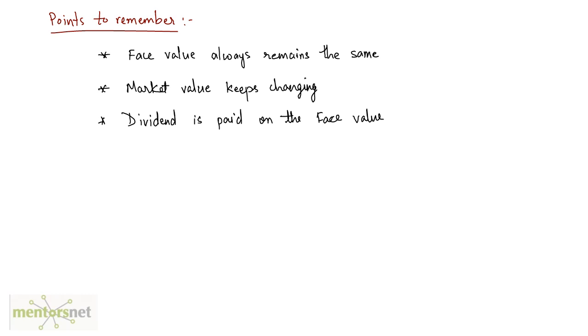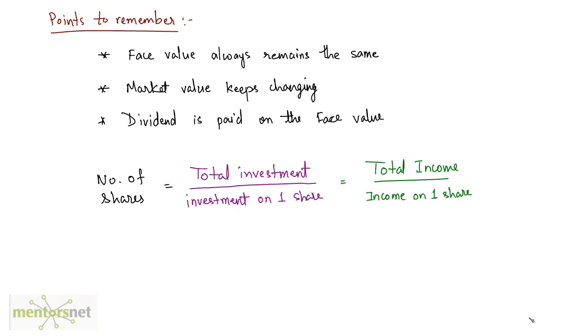Now what is the formula for calculating the number of shares? The number of shares bought equals the total investment made divided by the investment made on one share. It is also equal to the total income upon the income on one share. There's one more formula: it is also equal to the total face value divided by the face value of one share, and that gives you the number of shares.